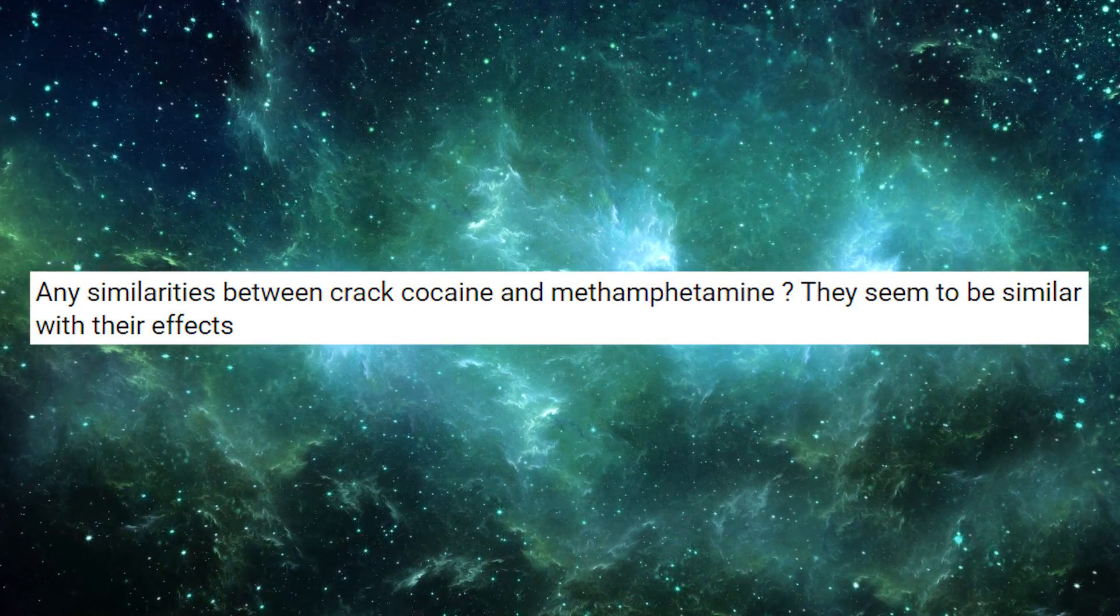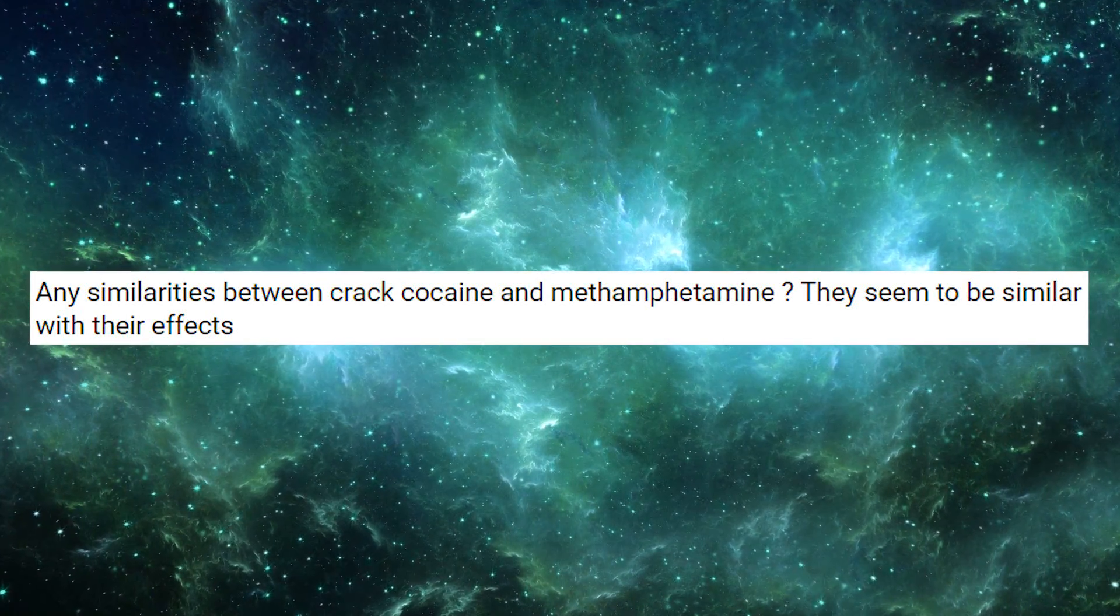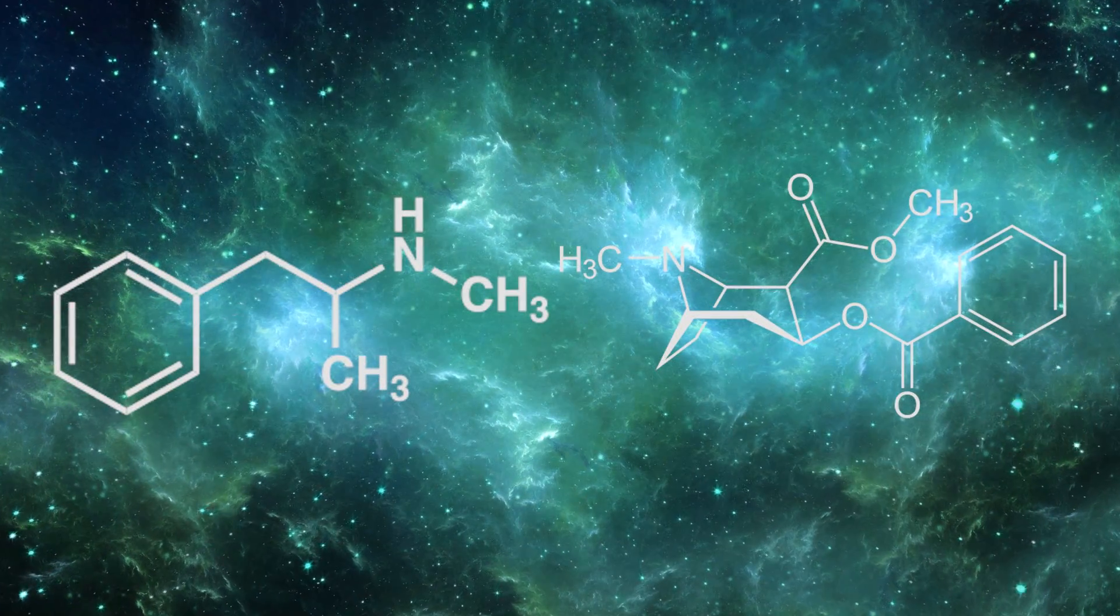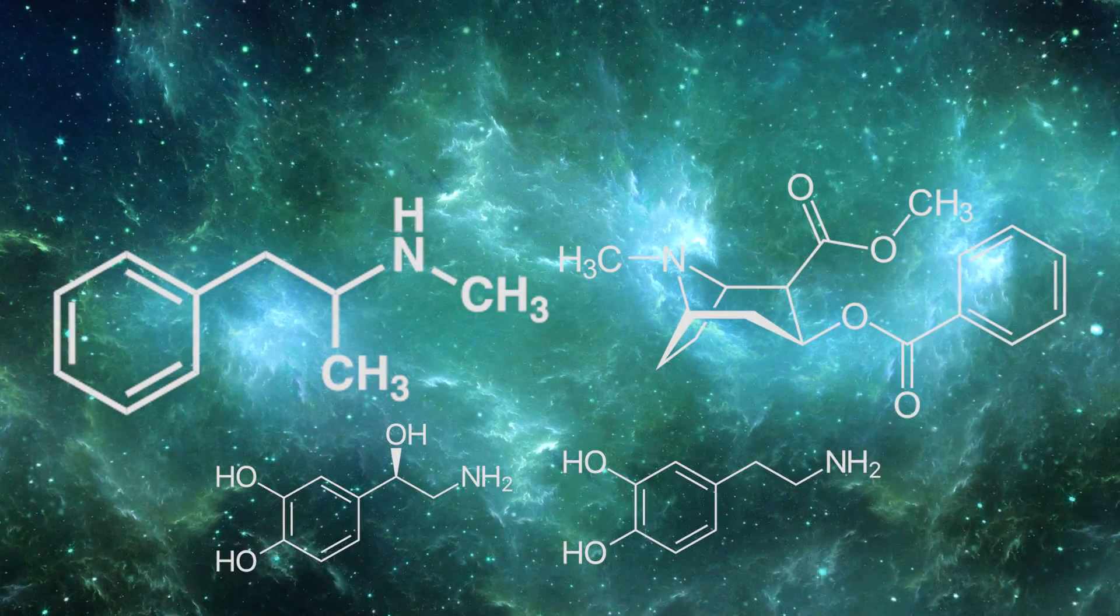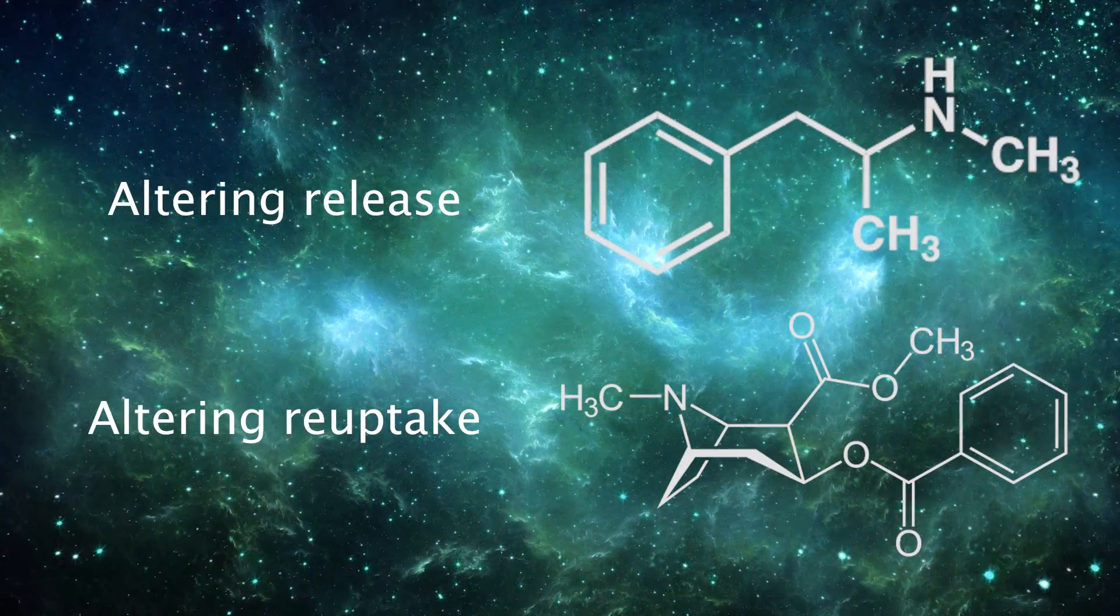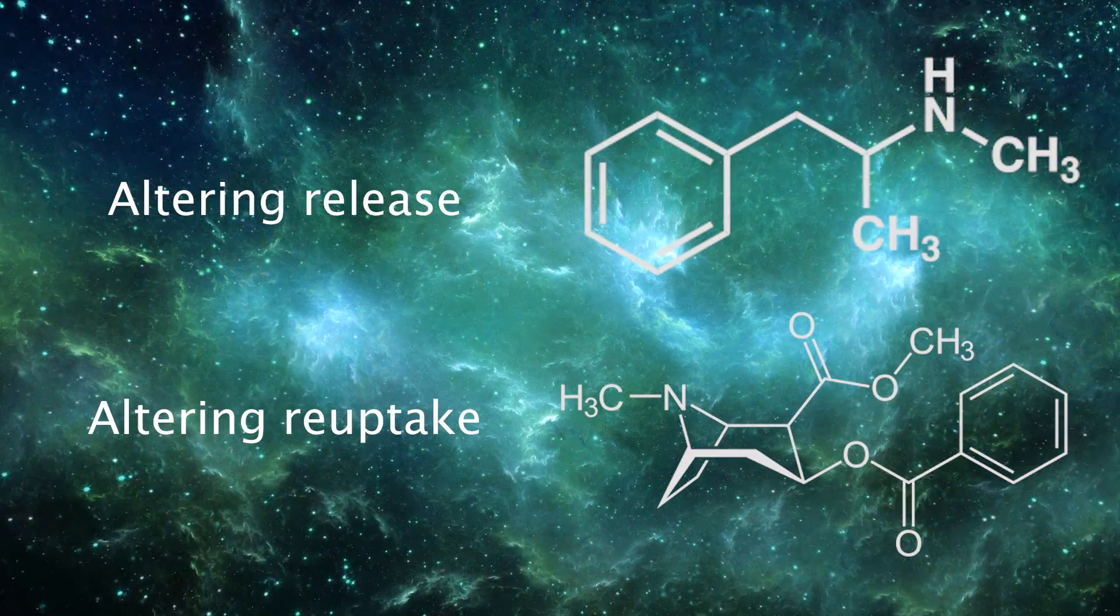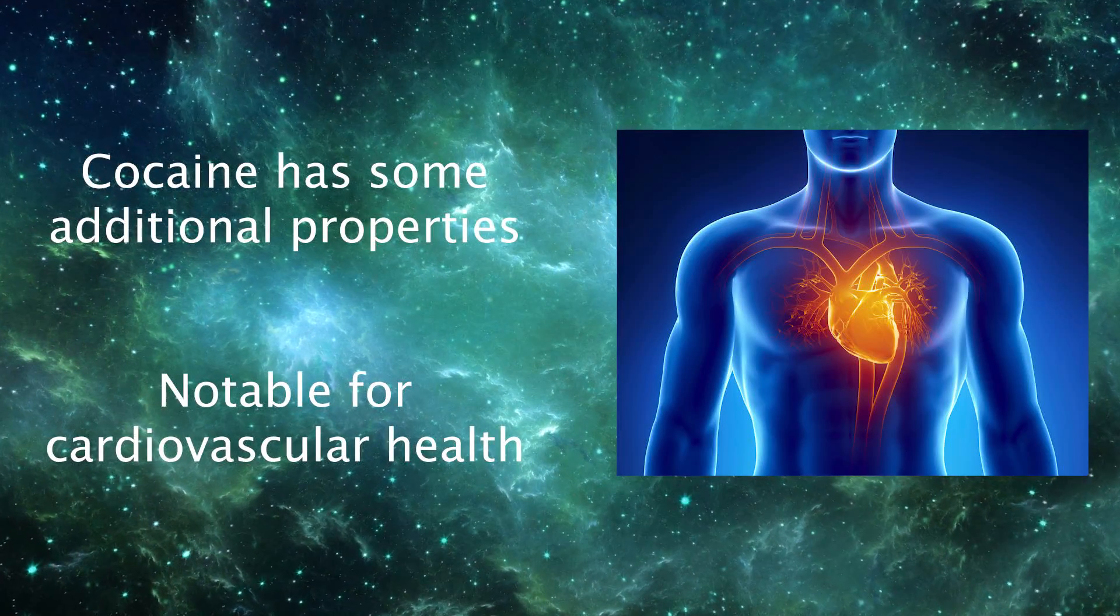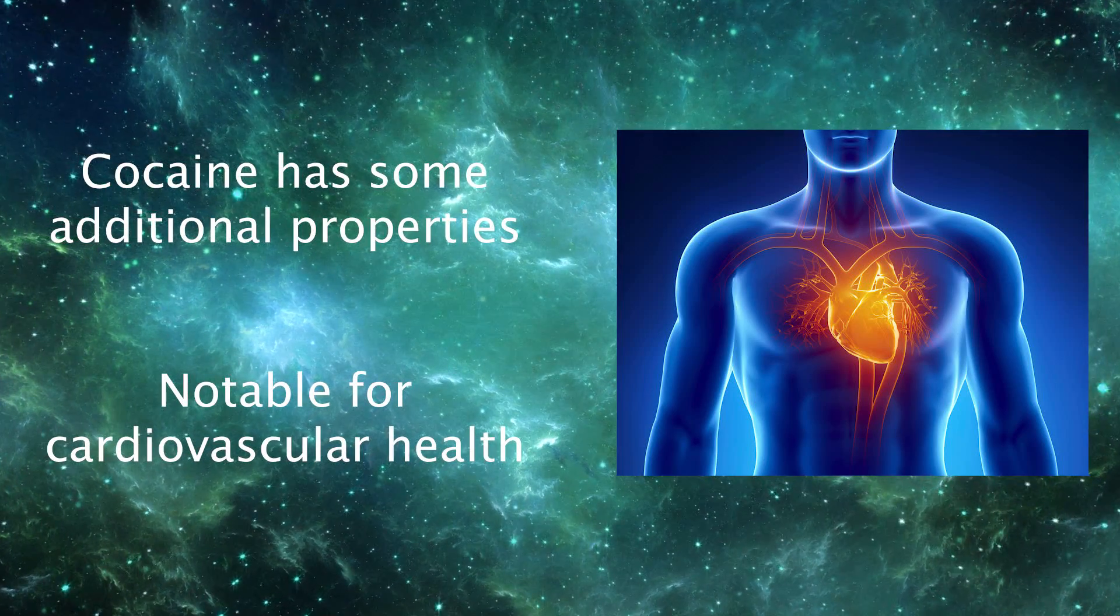Any similarities between crack cocaine and methamphetamine? They seem to be similar with their effects. They're both powerful stimulants, but they have notable differences. Although they're relying on the same basic monoamine systems, such as dopamine and norepinephrine, they alter those systems in different ways. A key part of methamphetamine's activity is that it increases the release of monoamines, while cocaine blocks their reuptake. Cocaine also has some other properties that could make it somewhat riskier for the cardiovascular system. Among those properties is its ability to interfere with ion channels.